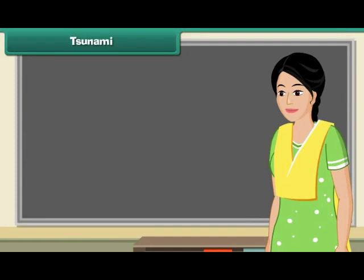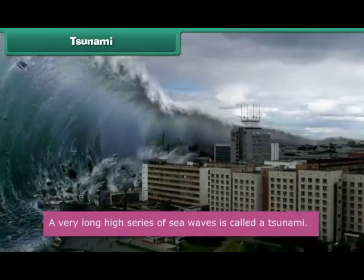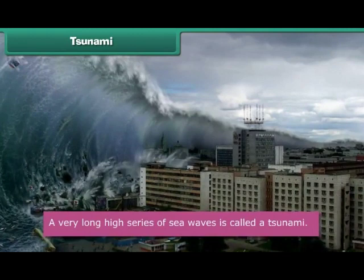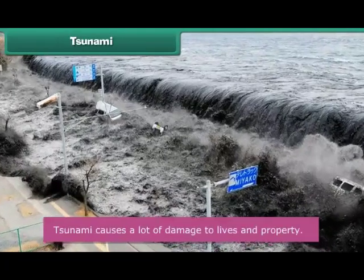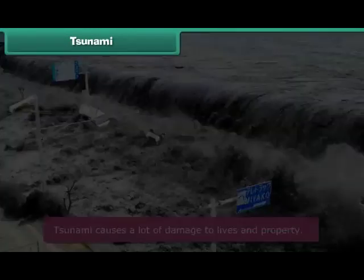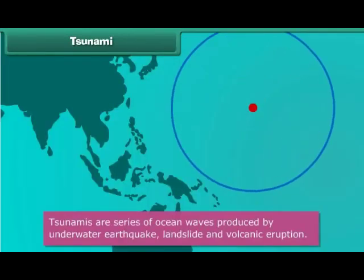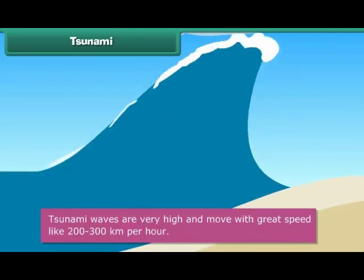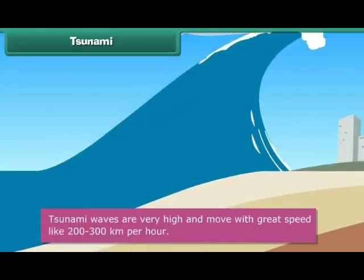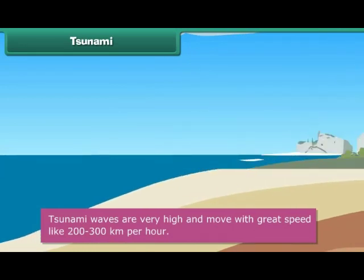Tsunami. Students, you must have heard about tsunami. A very long, high series of sea waves is called a tsunami. It causes a lot of damage to people and property near the sea. Tsunamis are series of ocean waves produced by underwater earthquakes, landslides, and volcanic eruptions. These waves are 30 meters high and 200 kilometers long and travel at a speed of 200 to 300 kilometers per hour.